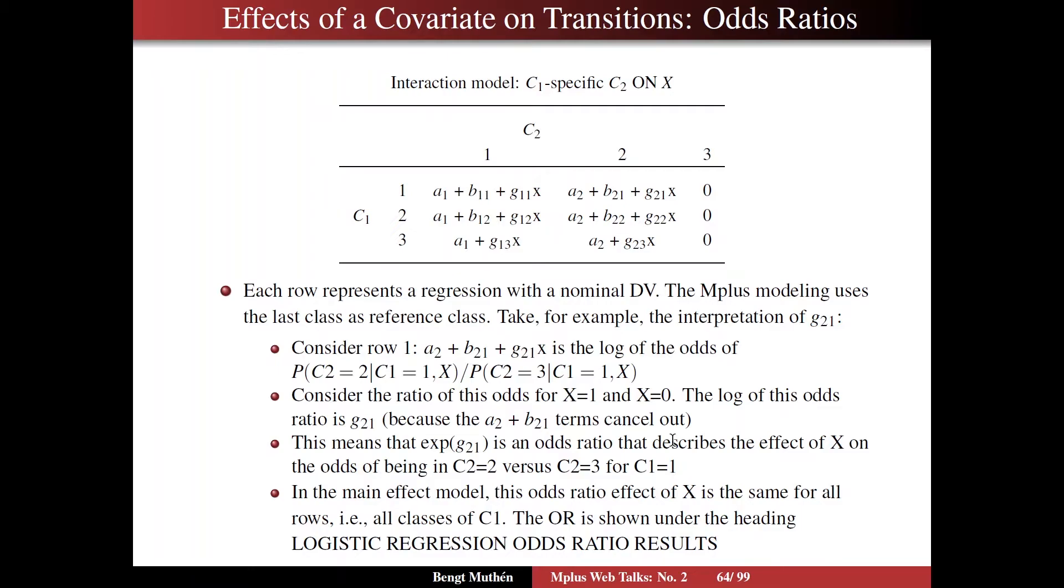Now turning then to odds ratios for the transitions, we note then, as in the technical part, that each row represents a regression with a nominal dependent variable. You have three categories here for C2, M-plus modeling using the last class as the reference class. So let's take a look at how you would interpret g21 here, that slope.